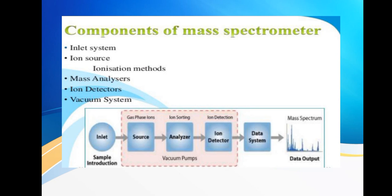Components of a mass spectrometer: we have three main components—the ion source, mass analyzer, and detector. In this diagram, we have the inlet for sample introduction. We have the source where gas phase ions are created. We have the mass analyzer where ion sorting takes place. We have the ion detector where ion detection occurs. Our ion source, mass analyzer, and ion detectors are within vacuum pumps. Then you have our data system and finally the mass spectrum, which is the data output of the entire analysis.